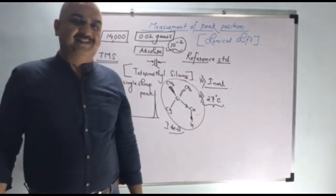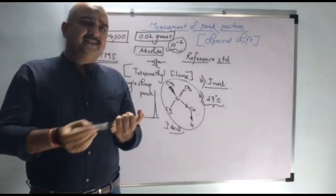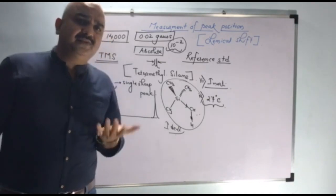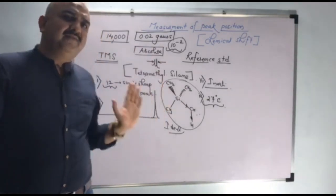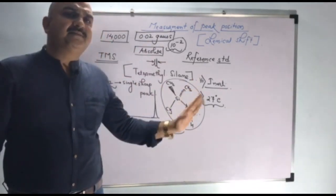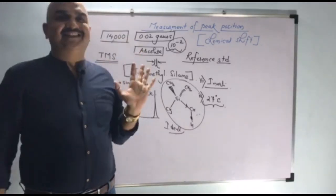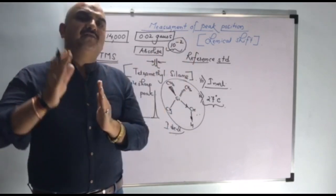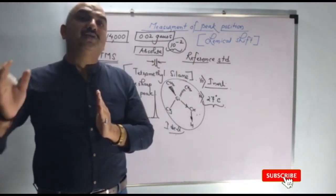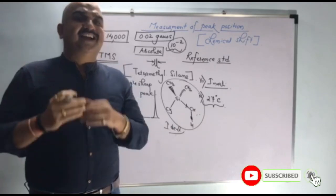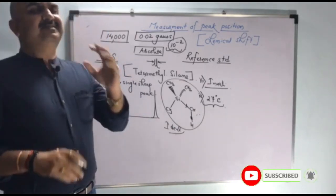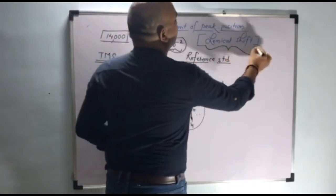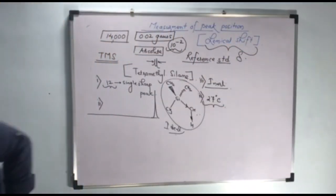This is the beauty of the NMR spectrum. Consider you have taken CH3CH2Cl — you add the reference standard TMS. The TMS signal comes at the extreme right hand side. With reference to that signal, we can find out the position of the other signals. Finding this position of a particular peak relative to the TMS peak is known as chemical shift.